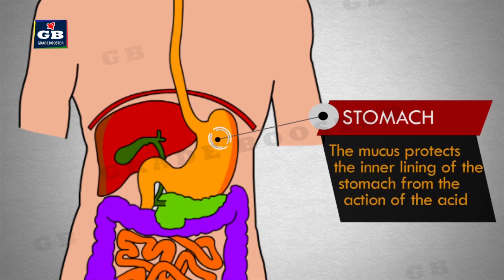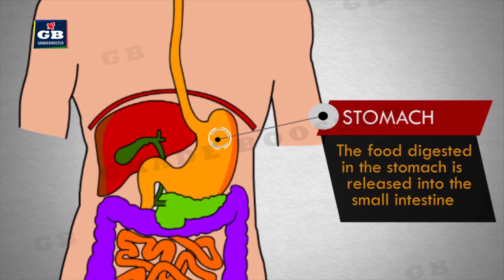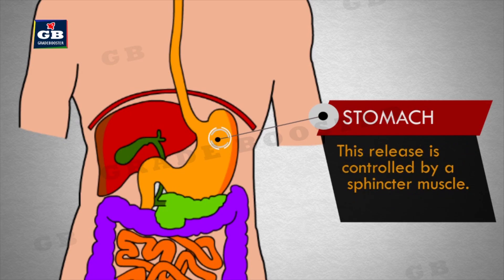The mucus protects the inner lining of the stomach from the action of the acid under normal conditions. The food that is churned and partly digested in the stomach is released into the small intestine in small amounts. This release is controlled by a sphincter muscle.